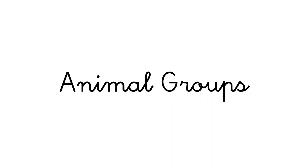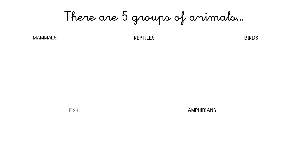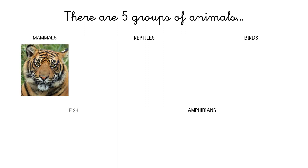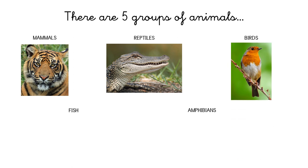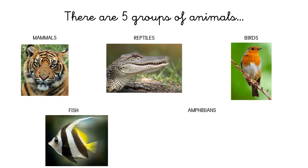Today we are going to talk about animal groups. There are five groups of animals: mammals, reptiles, birds, fish, and amphibians.